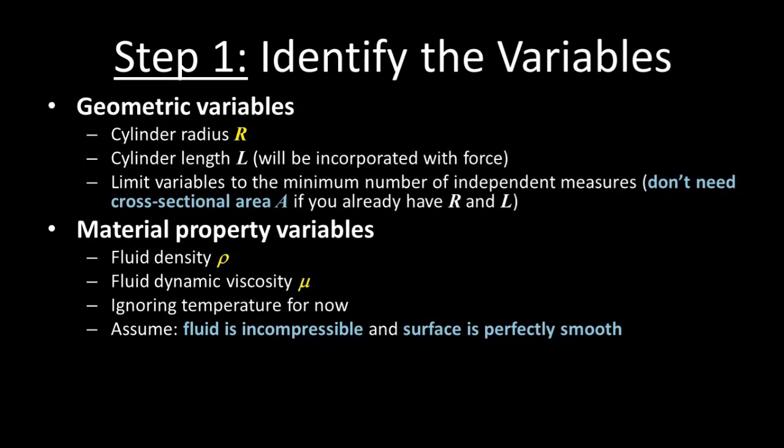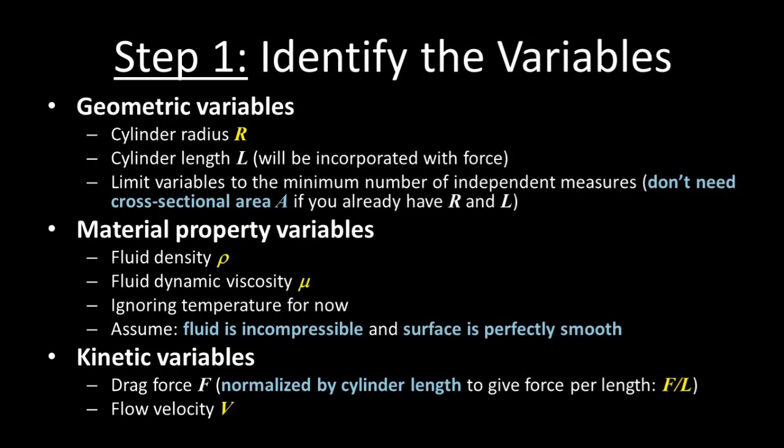Next, let's consider material property variables. For the fluid medium, that involves characteristics like viscosity and density. We're keeping the problem simple, and not explicitly factoring in the effect of temperature on those properties for now. Just note that temperature may need to be controlled in a realistic experiment. We'll also consider the cylindrical object as incompressible, indestructible, and perfectly smooth. The liquid is also being approximated as incompressible. Finally, let's consider the kinetic variables. These are the velocity of the fluid, and the drag force. Again we're normalizing force with respect to length of the cylinder, so force per length. So we have five variables: radius, velocity, density, viscosity, and force per length.